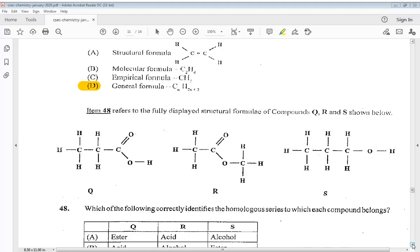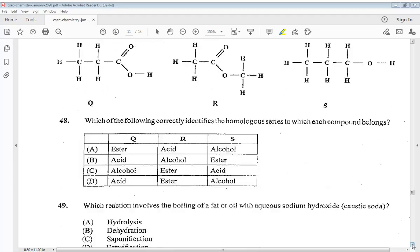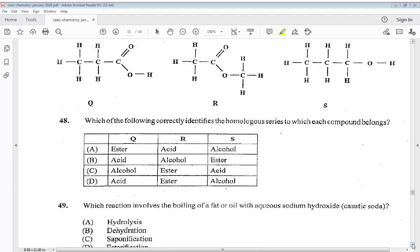Question 48. Item 48 refers to the fully displayed structural formula of compounds Q, R, and S shown below. Which of the following correctly identifies the homologous series to which compound belongs? So we know it is Q is acid, R is ester, S is alcohol.